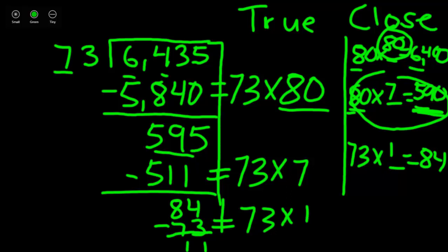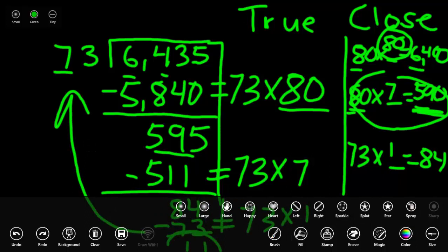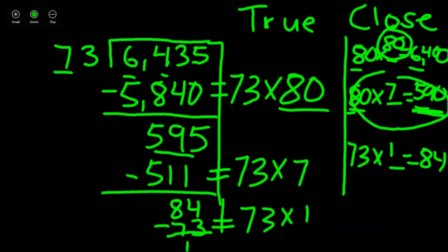Now, we see that our answer here, 11, is actually smaller than our divisor. So we are done. You can't multiply 73 by a number to get it close to 11 if it's a whole number. So this 11 down here becomes our remainder, but we still don't have our answer yet.